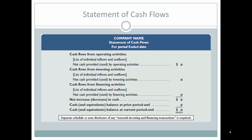A Statement of Cash Flows lists cash flows from operating activities with individual inflows and outflows and a net total, followed by the investing section with its net total, and the financing section with its net total. All three sections are added together to give the total net increase or decrease in cash. That change in cash is added to the cash balance at the prior period end, which gives you the new cash balance at the current period end. A separate schedule discloses any non-cash investing or financing transactions.